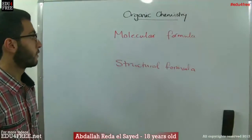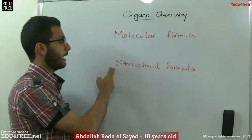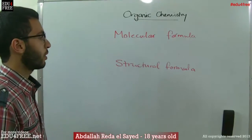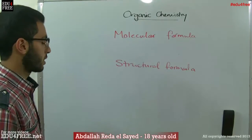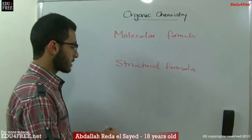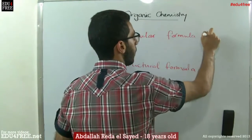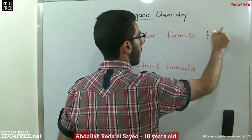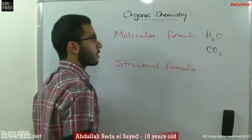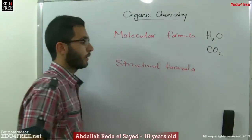Today we are going to learn the difference between the molecular formula and the structural formula in writing and drawing compounds. The molecular formula, for example, is just like H2O and CO2. This is water, this is carbon dioxide.